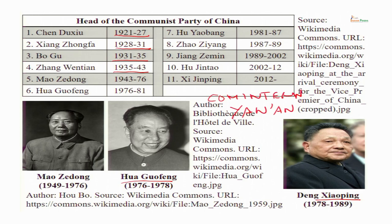Soon Hua Guofeng was forced to retire and was replaced by Deng Xiaoping's protégé, Hu Yaobang. He became the new chairman, and in 1982 a new constitution of the party was introduced. The post of chairman was abolished and a new post of General Secretary was created. Since then the head of the party has been the General Secretary.